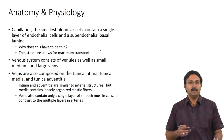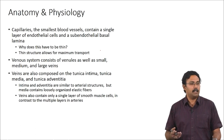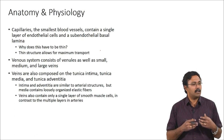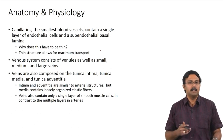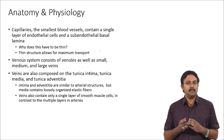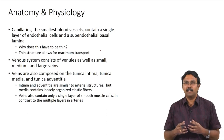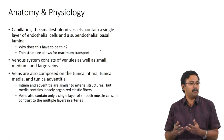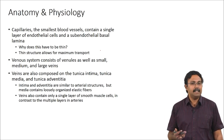The venous system consists of venules and small, medium, and large veins. Veins are again composed of tunica intima, tunica media, and tunica adventitia; however, the compositions differ. Intima and adventitia are similar to arterial structures, but the media contains loosely organized elastic fibers instead of the tightly packed arrangement in arteries. Veins contain a single layer of smooth muscle cells, in contrast to the multiple layers in arteries. This is all dependent on the pressures these vessels face — large arteries face very high pressures, so their structure is designed accordingly, while veins and smaller arteries do not.